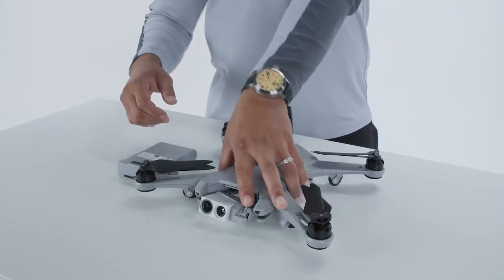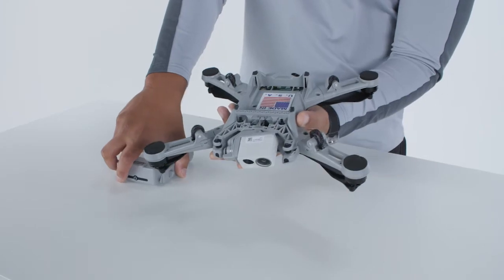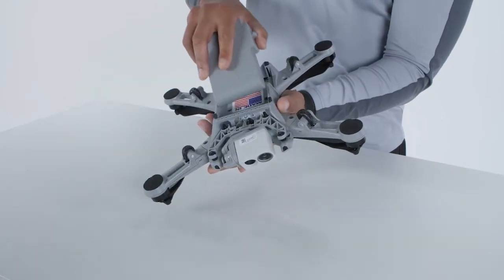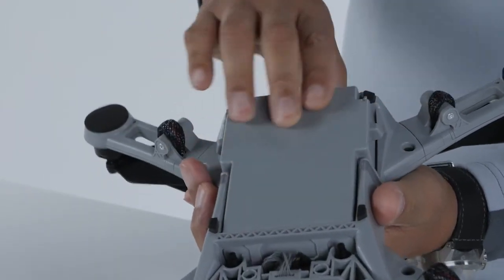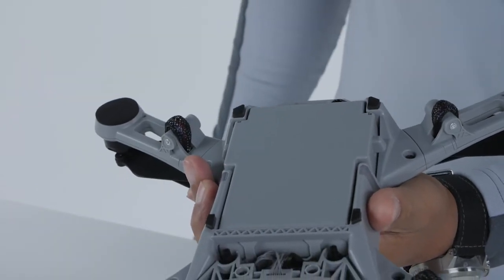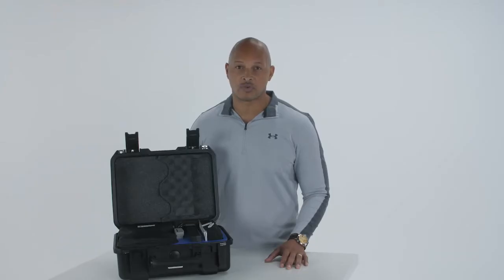With the fully charged battery, we can go ahead and install it in the Golden Eagle drone. Flip the drone, line up the connectors, and install the battery. You should feel and hear the latching mechanism snap into place. Visually verify that both latches are fully engaged with the drone airframe.